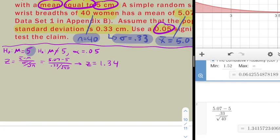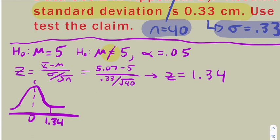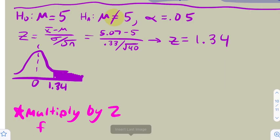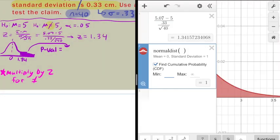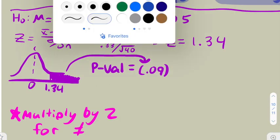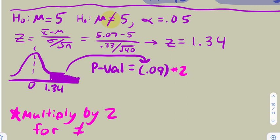Now it's time to draw our picture for the p-value and put that 1.34 on the axis. Now, because this is a not equal to problem, we're going to shade the smaller direction, which would be the right, and multiply by 2. We do that for all not equal to problems. So we're going to figure out that area to the right. I'm putting in 1.34 to infinity. We get 0.09, and then we're going to multiply it by 2 to give us a p-value of 0.18.